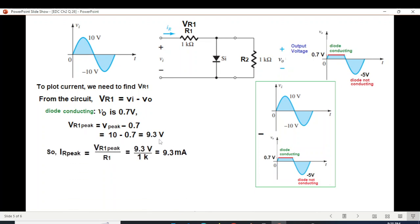And from this we can calculate IR peak. So VR1 peak divided by R1, 9.3 divided by 1 kilo is 9.3 milliampere. So we can draw the first half current. The first half current will be 9.3 milliampere. What about the second half current?